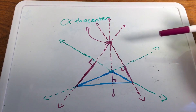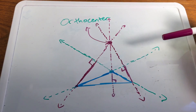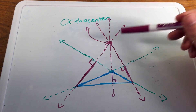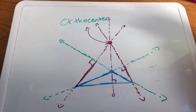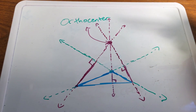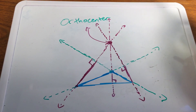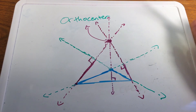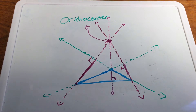The only thing really special about the orthocenter is that the three altitudes of the triangle will always meet at one specific point, and that point is called the orthocenter. If you've gone through all four of my videos on the centroid, incenter, circumcenter, and orthocenter of a triangle, I suggest you look up what the Euler line is. Thank you for watching and have a good day.